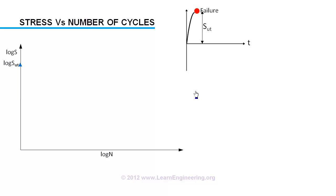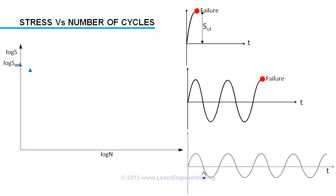If you decrease the stress amplitude, it will execute more number of cycles before it fails. Decreasing stress even further, it will be able to execute even more number of cycles. So this will follow a trend like this.